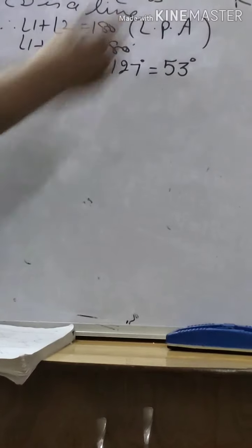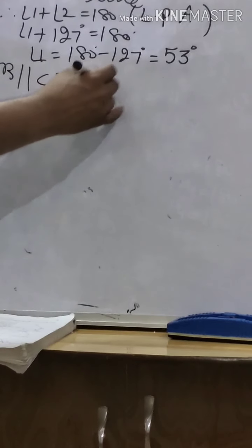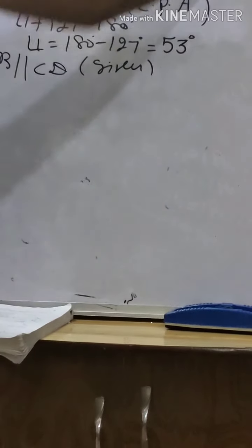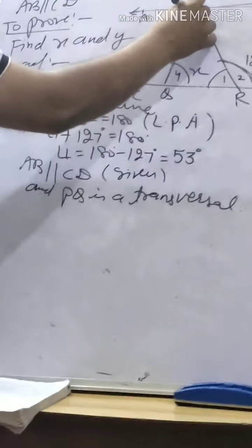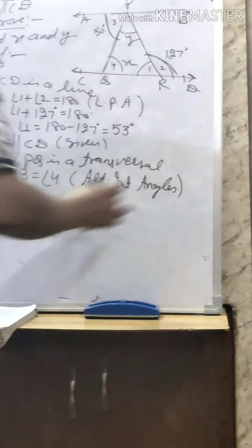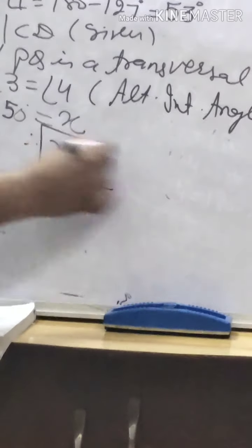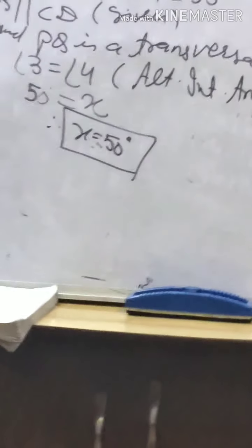Now taking angles 3 and 4: AB is parallel to CD and PQ is a transversal. Angle 3 and angle 4 are alternate interior angles. Angle 3 is 50 degrees and angle 4 is x. Therefore x is equal to 50 degrees.